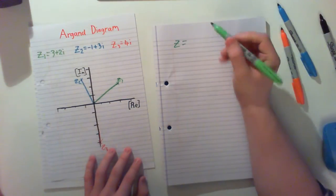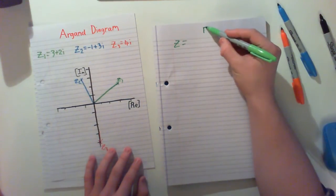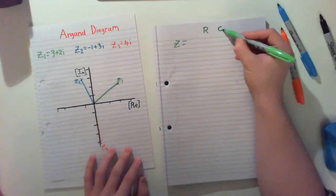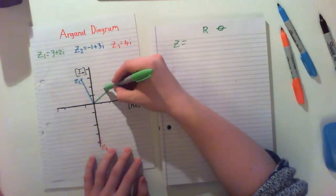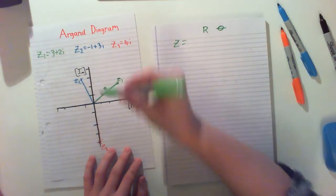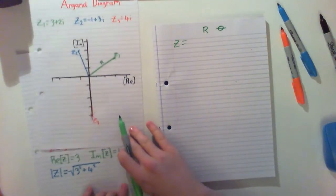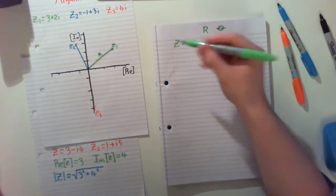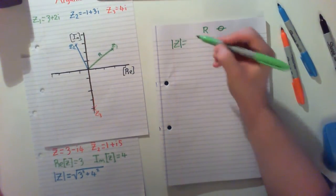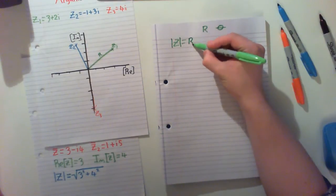From some things which are R and our angle theta. So R is the length here which is equal to our magnitude. So we know how to calculate our magnitude. So our magnitude of Z is equal to R.